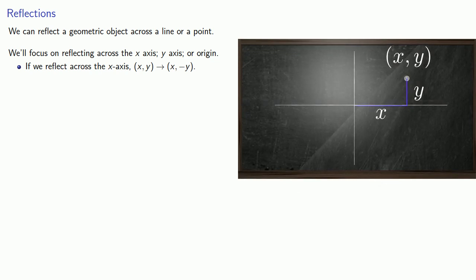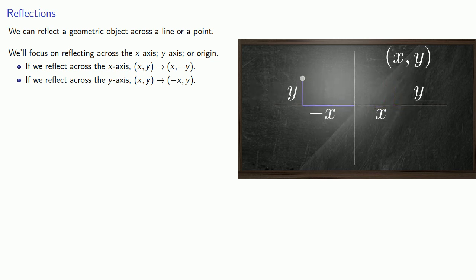If we reflect across the y-axis, a point whose coordinates are (x, y) becomes a point whose coordinates are (negative x, y).